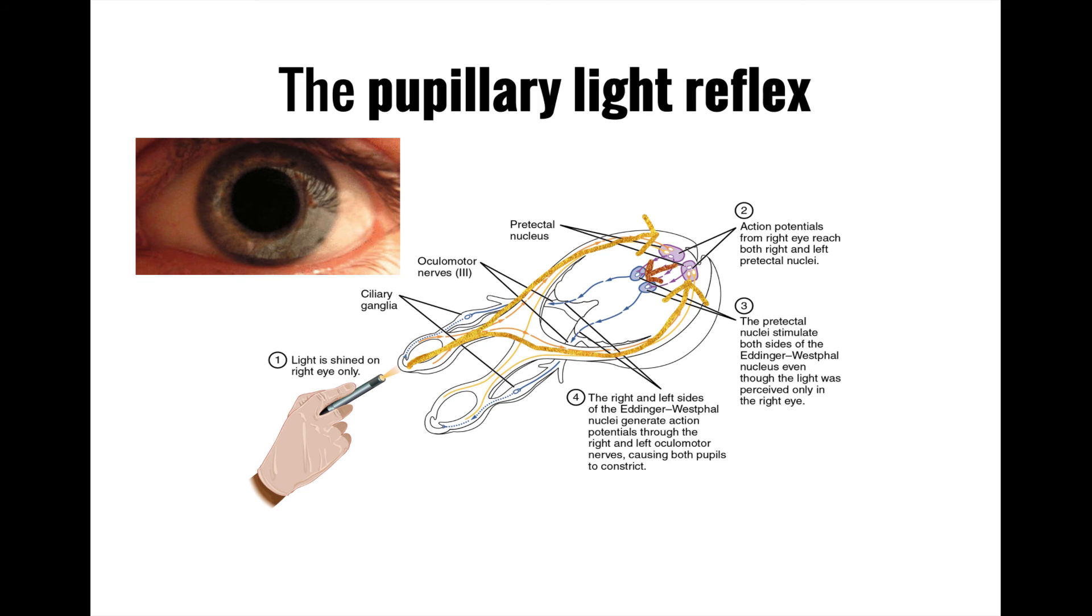This is why light coming into even one eye will cause both eyes to constrict. The Edinger-Westphal nuclei then send parasympathetic signals onto the oculomotor nerve, which then activate the ciliary sphincter in the irises, causing them to contract and thereby reducing the size of the pupils.